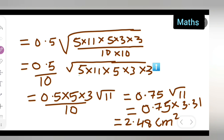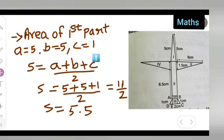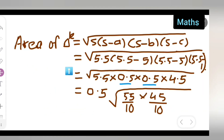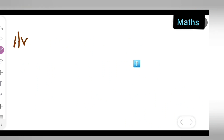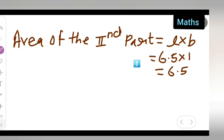Next, let us find the area of the second part. For the second part, the formula is length × breadth. The length is 6.5 centimeters and the breadth is 1 centimeter. So area of the second part = 6.5 × 1 = 6.5 centimeters square.